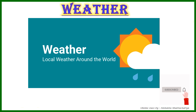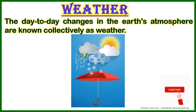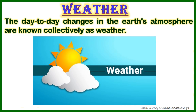Before entering the main topic, we have to understand what is the meaning of weather first. The day-to-day changes in the Earth's atmosphere are known as weather. For example, if it is raining in the morning, we can't predict whether there will be rain in the afternoon or sunshine. These day-to-day variations in the atmosphere are what we call weather.